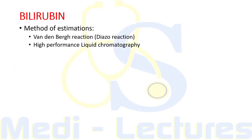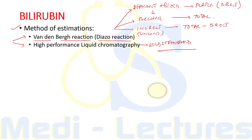Starting with bilirubin — the methods of estimation of serum bilirubin include the van den Bergh reaction, also known as the diazo reaction, and more recently, high-performance liquid chromatography (HPLC), which is now the gold standard. In the van den Bergh reaction, diazo reagent is mixed with blood, giving a purple color representing the direct or conjugated fraction. Adding alcohol gives the total bilirubin, and the indirect or unconjugated bilirubin is estimated by subtracting direct from total.